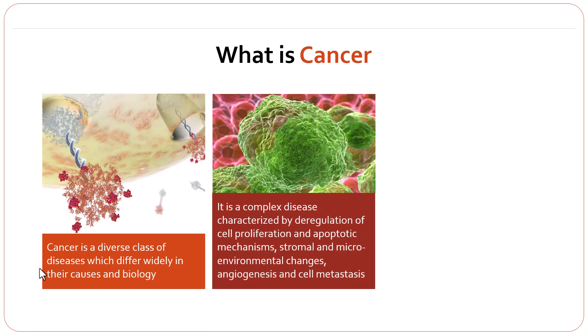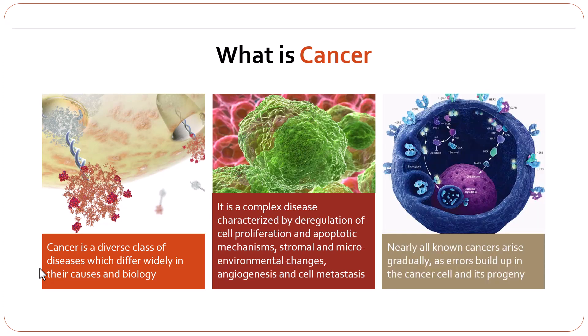It is a complex disease characterized by deregulation of cell proliferation and apoptotic mechanisms, stromal and microenvironmental changes, angiogenesis, and eventually metastasis, which means the cells spread to distant sites. Nearly all known cancers arise gradually as errors build up in the cancer cell and its progeny.